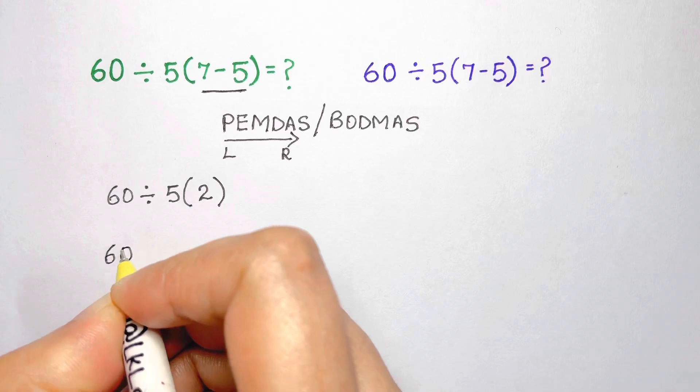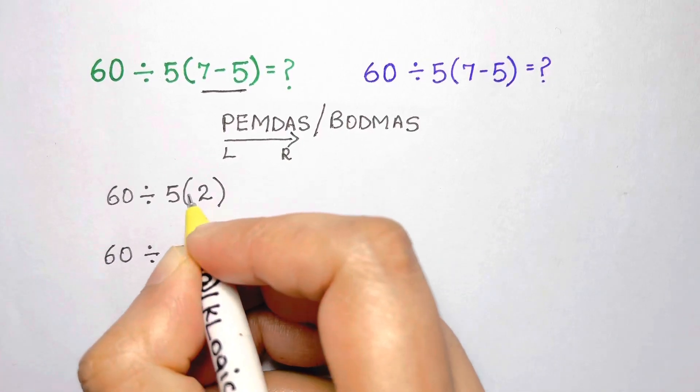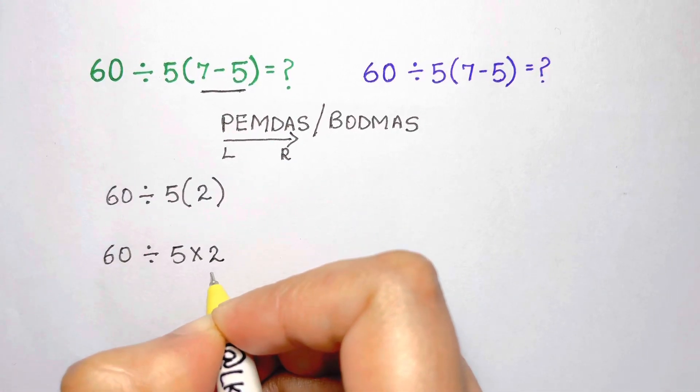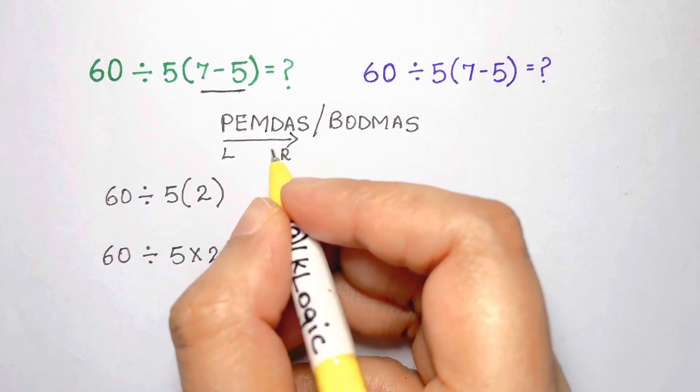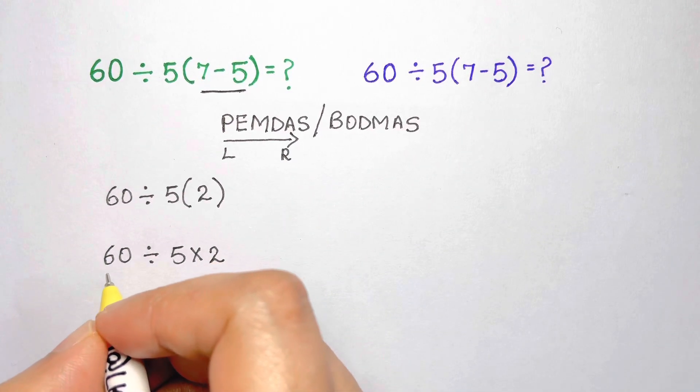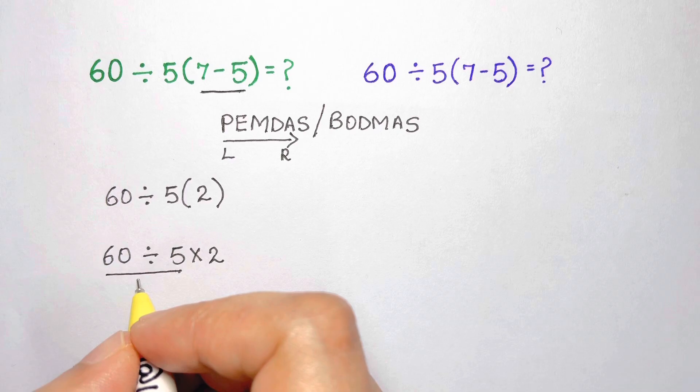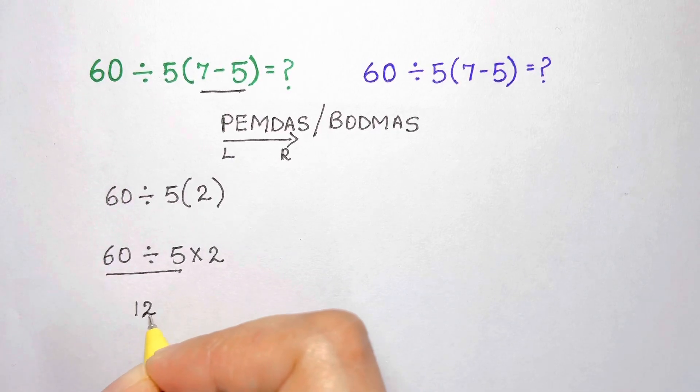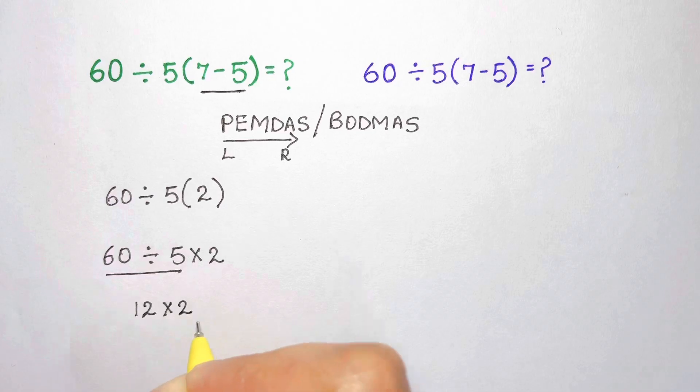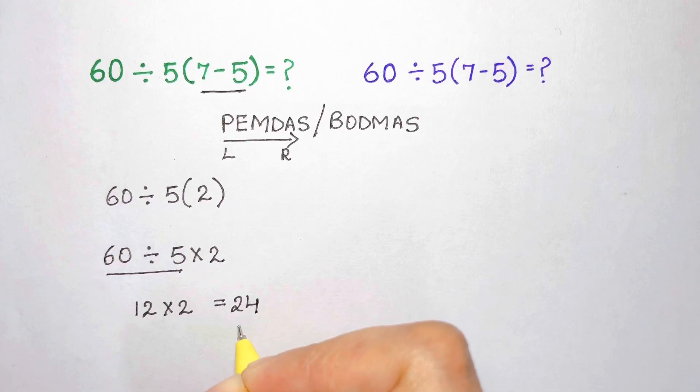According to the order of operations, we should evaluate multiplication and division with equal precedence going from left to right. We should evaluate 60 divided by 5 first. This will equal 12. Finally, we evaluate 12 times 2, and that gives us the correct answer of 24.